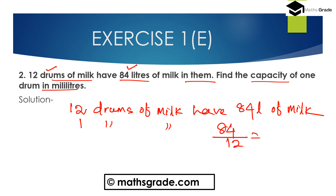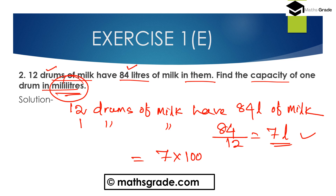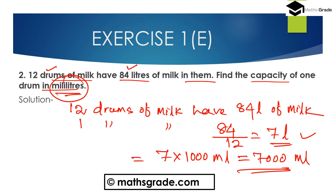One drum of milk has 84 divided by 12 liters, which equals 7 liters. So one drum has 7 liters of milk. Now we convert this to milliliters: 7 liters multiplied by 1000 milliliters equals 7000 milliliters. So the capacity of one drum is 7000 milliliters.